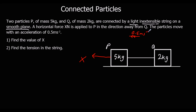The particles move with an acceleration of 0.5 metres per second squared. We need to find the value of X. Drawing on the forces: since it's a smooth plane, there are no friction forces. There's a tension force acting back on P, because it's dragging Q along, and that same tension force pulls Q forwards. This force in the string is called tension.